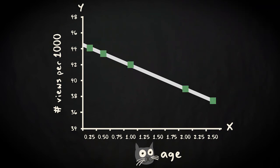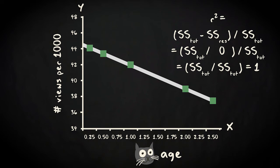What happens if our model predicts the observations perfectly? Well, then the residuals are zero. There is no error. In that case, r squared equals the total sum of squares divided by the total sum of squares. In other words, r squared equals 1.